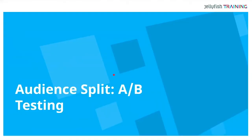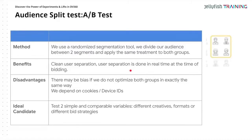The other type of test we can do is simple A/B testing, which we're very familiar with. A/B testing uses segmentation — you divide your audience into two segments but apply the same treatment to both groups with no creative changes. There's a clean user separation done in real time of bidding. A disadvantage is there may be bias if we don't optimize both groups in exactly the same way, and we still depend on cookies and device IDs.